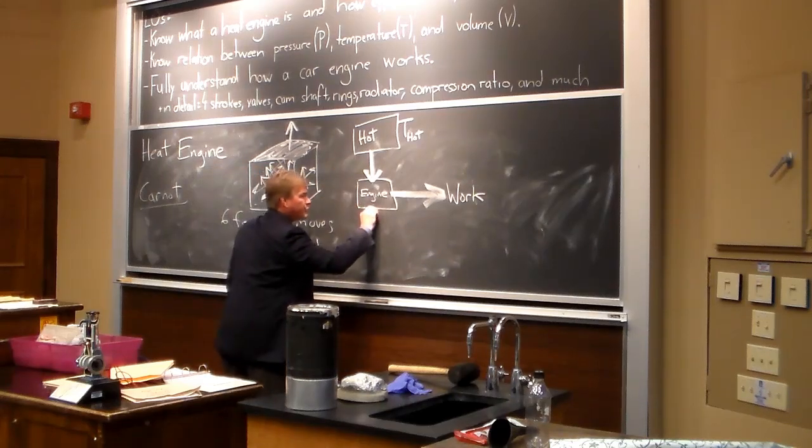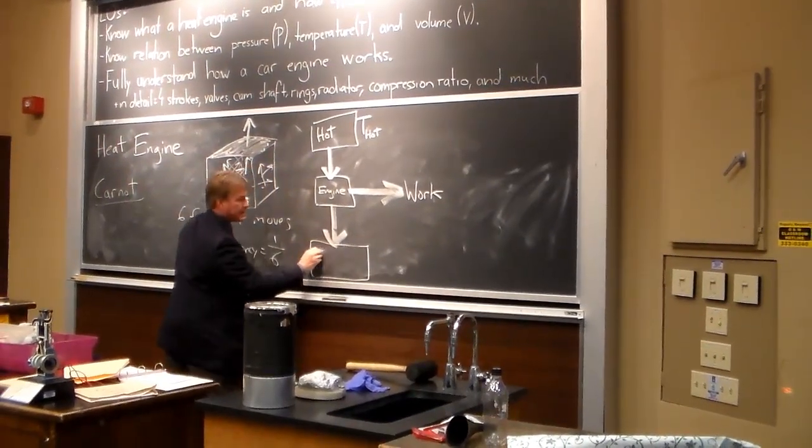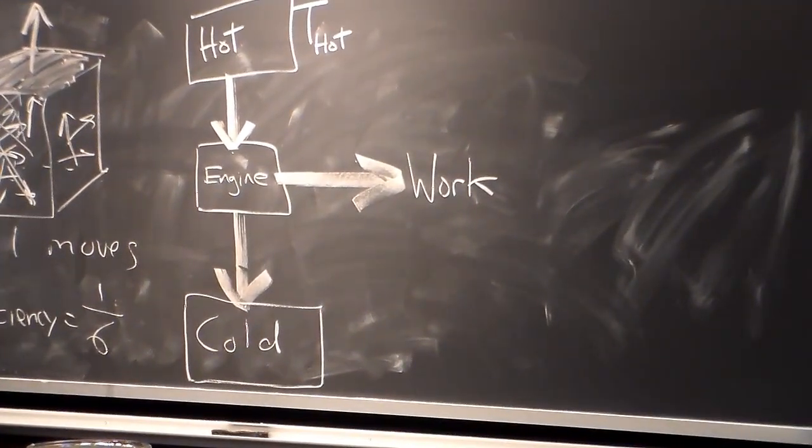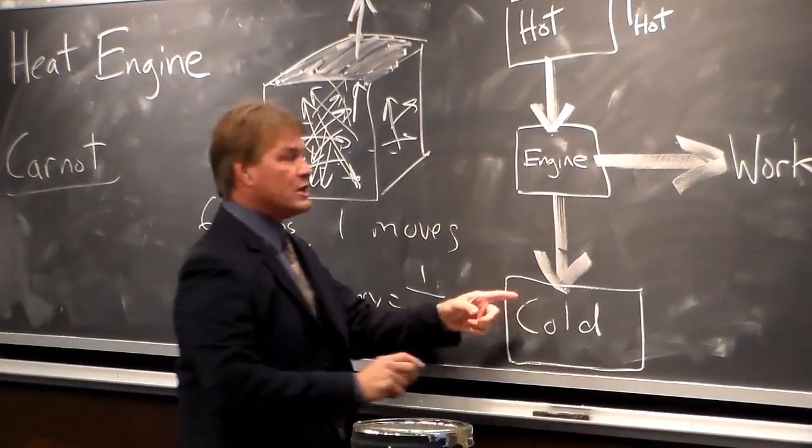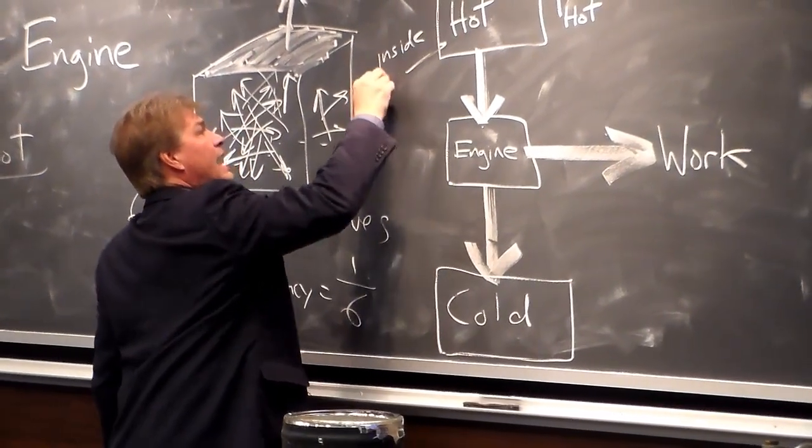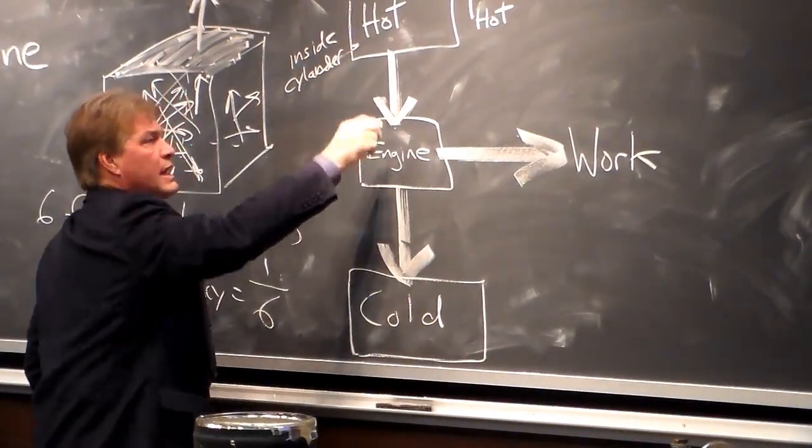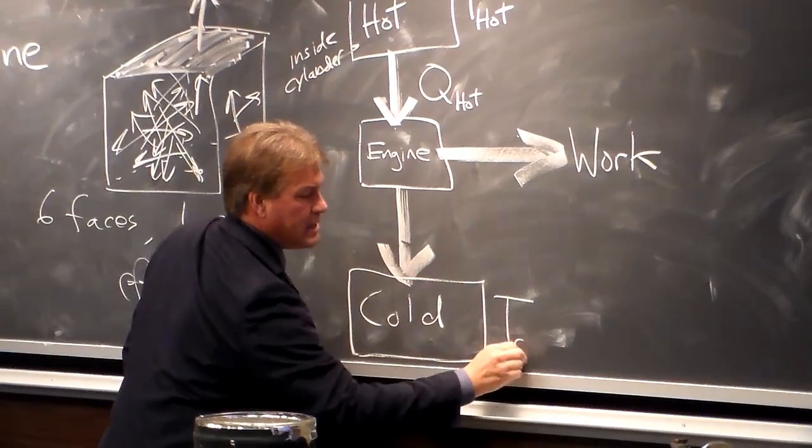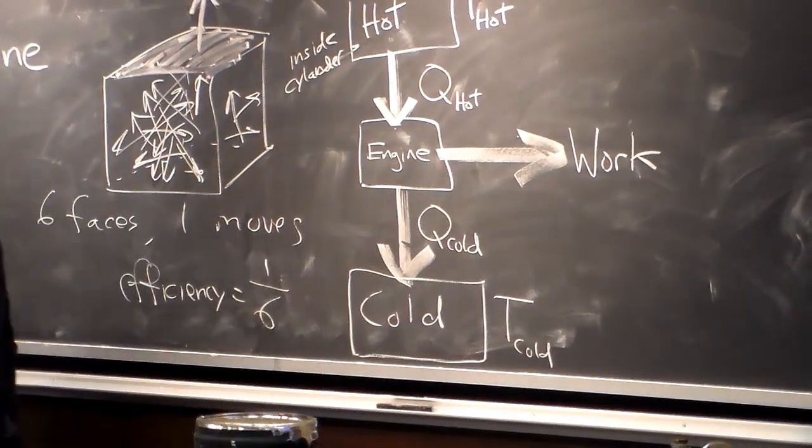So we have one other important part. We have to take heat out, and we take it out to some place that's cold. You might say, oh, I carry a refrigerator with me. No, no, no. The outside air can be cold. For a car, this is just the outside air. This is inside the cylinder. This is the exploding gasoline. That's the hot. And this transfers energy to the engine. We'll call that Q-hot. This temperature is T-cold, and it also transfers energy back to the environment. T-cold.